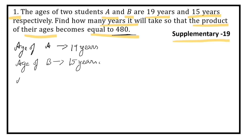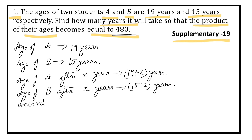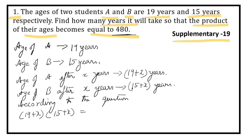Age of A after X years is 19 plus X years. Age of B after X years is equal to 15 plus X years. According to the question, the product of their ages means 19 plus X into 15 plus X is equal to 480. Let us write X first so that we can use the formula: X plus 19 into X plus 15 is equal to 480.